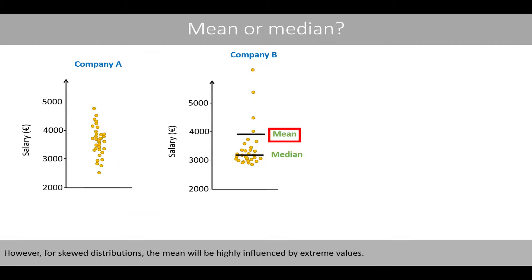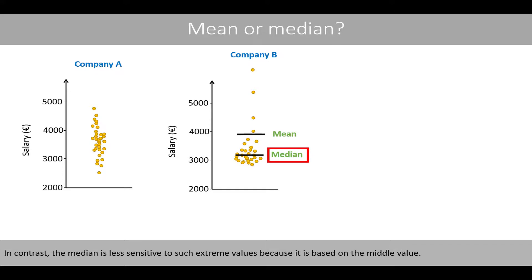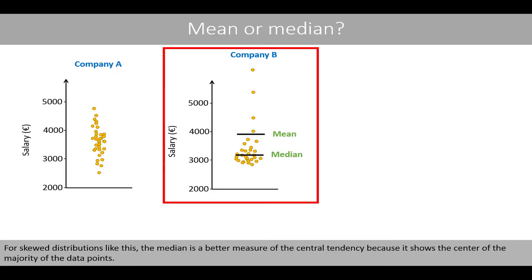However, for skewed distributions, the mean will be highly influenced by extreme values. In contrast, the median is less sensitive to such extreme values because it is based on the middle value. For skewed distributions like this, the median is the better measure of the central tendency because it shows the center of the majority of the data points.